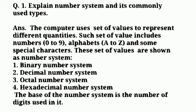The first question is explain number system and its commonly used types. Answer: the computer uses set of values to represent different quantities. Such set of values includes numbers 0 to 9, alphabets A to Z, and some special characters. These set of values are shown as number system.